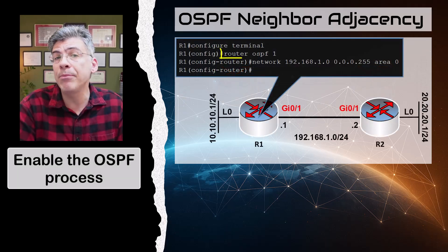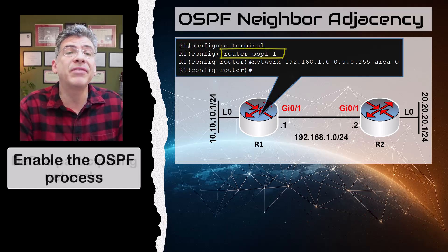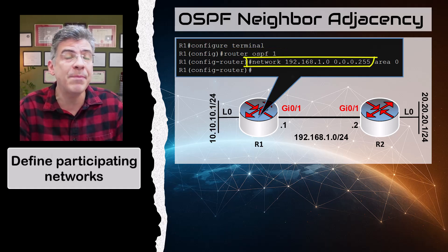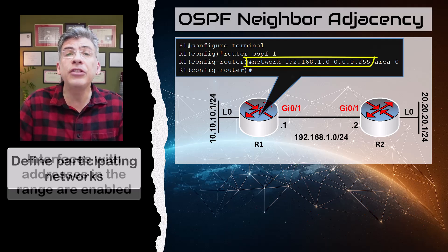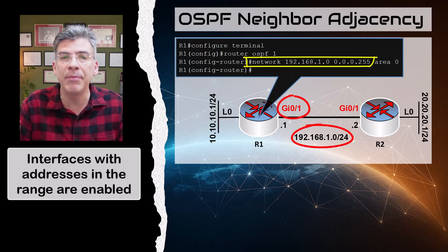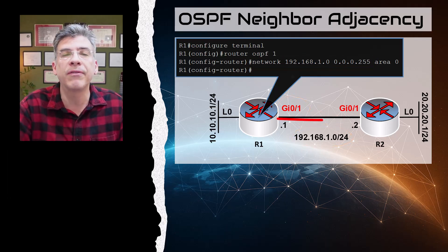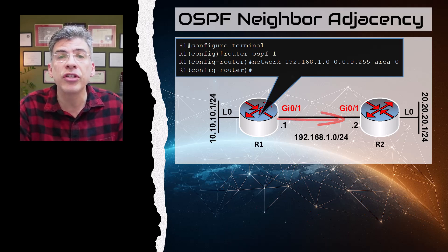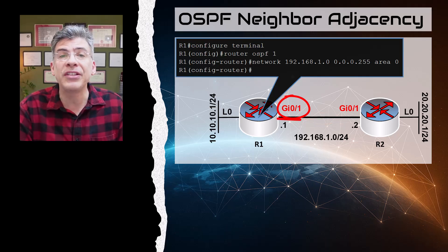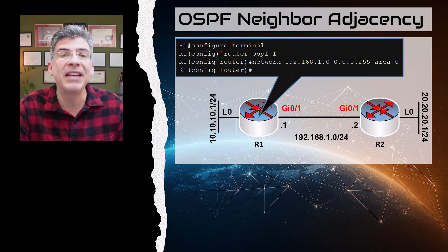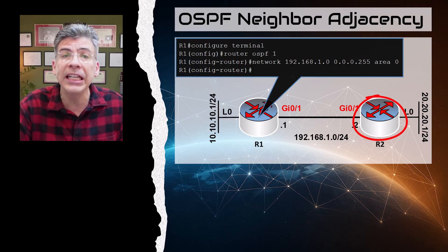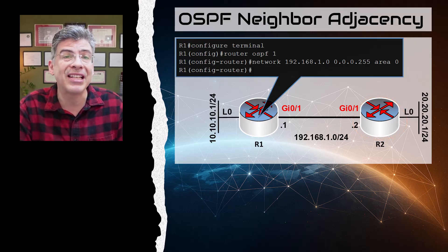First of all, we have to enable the OSPF process. We have to define which networks are participating in the routing protocol, and interfaces with addresses found within the range of the network command are enabled with OSPF, and they begin sending out multicast packets searching for an OSPF neighbor. So by implementing these configurations, the Gigabit Ethernet 0/1 interface on R1 begins to search for an OSPF neighbor on that link. If R2 is configured accordingly, the neighbor discovery process begins.